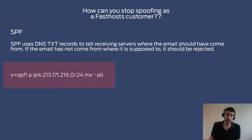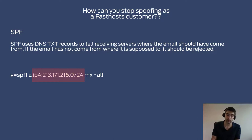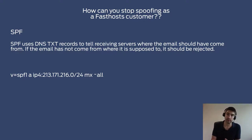You can see an example on the screen here. SPF uses a DNS TXT record to tell receiving servers where the email should have come from. If the email has not come from where it's supposed to, it should be rejected. The important thing for now is the IP address you can see there — 213.171.216.0/24. That last part, /24, means the entire range from .0 to .255 would be included in the safe senders list. That gets added to our DNS records so all receiving servers can see it.